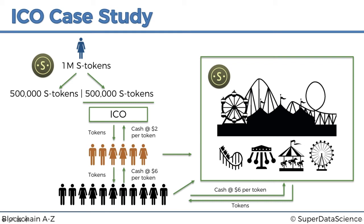If people want to use tokens in the park, they need to buy them — either off early investors or from the businesses. Mary might set up a little exchange here. This helps businesses spread out tokens across people who are interested in them, and those people then go into the park and spend them. That's how this whole system works.